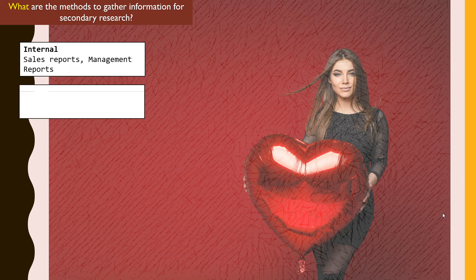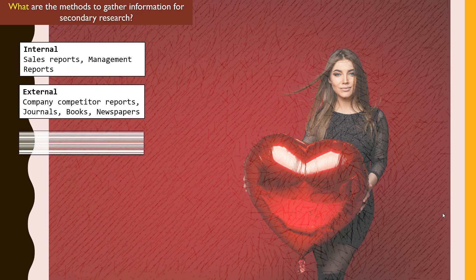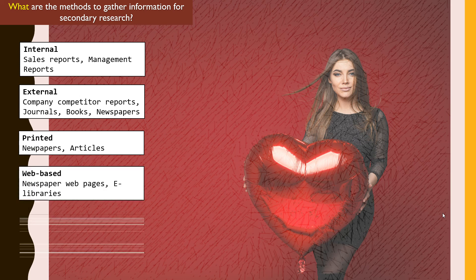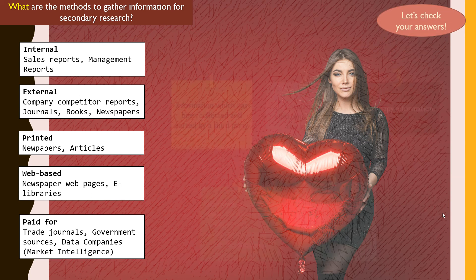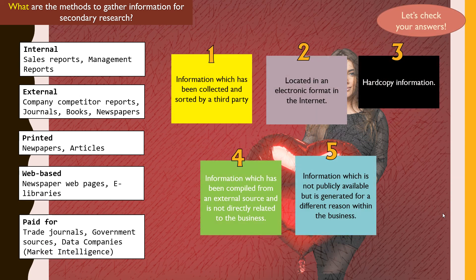Let's put all the information on the screen before we do the matching of answers: printed, web-based, and paid-for materials. Checking our answers — item one, information which has been collected and sorted by a third party, goes to the paid-for type: trade journals, government sources, and things like that.